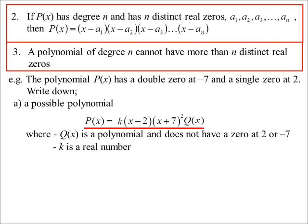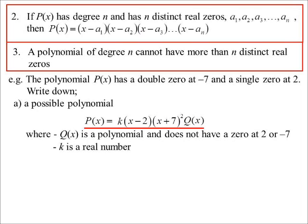It could also be times k—who's to say it's monic? I suppose I don't actually need the k because the Q(x) could have the k in it. If I'm told it's monic and of degree 3, then there's the factors we know. That's already of degree 3, already monic. I don't go any further. That one would only have one possible solution.